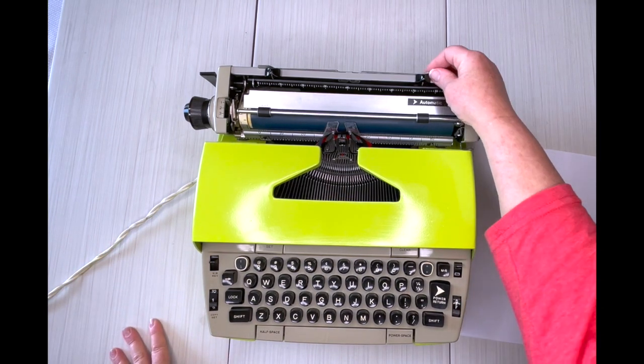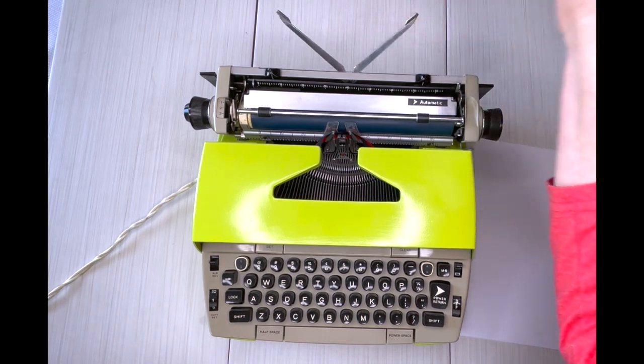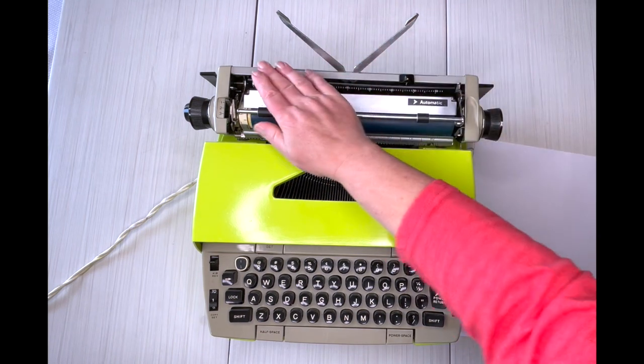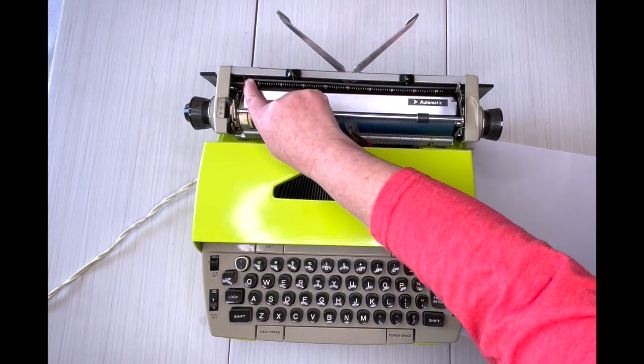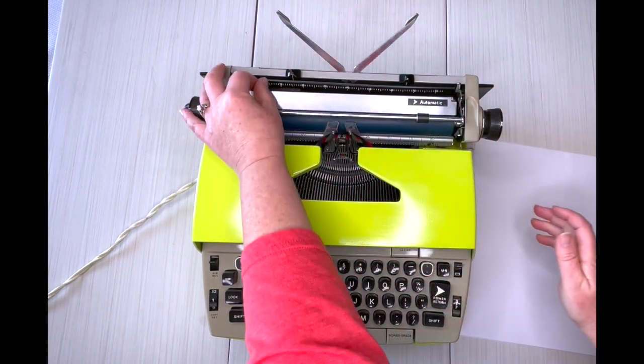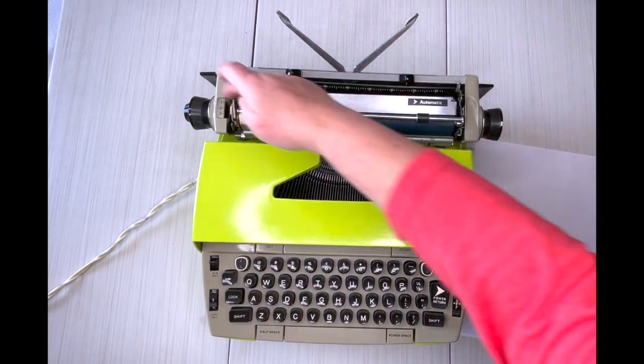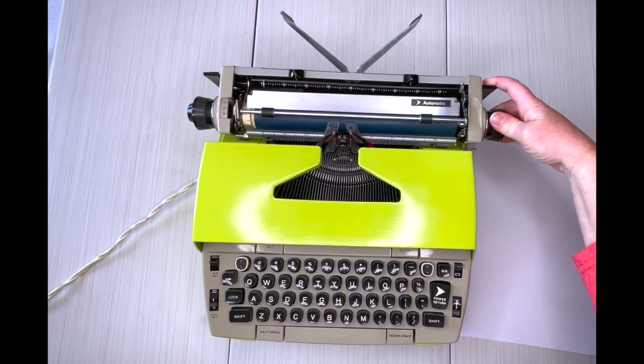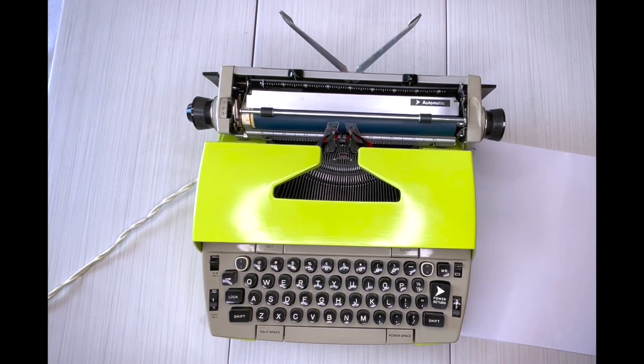Let's start back here. Here's your paper holder, and I like to leave it up. Margins press and drag. There's your paper guide right here. Your carriage release is this black lever on each side, and the carriage is going to move however far you have the margins set.